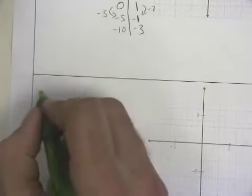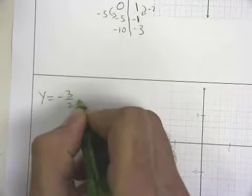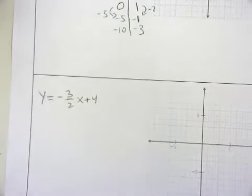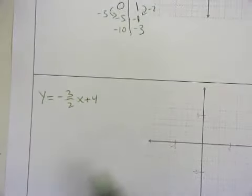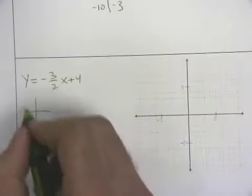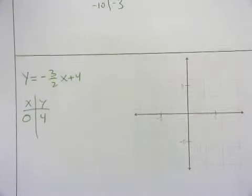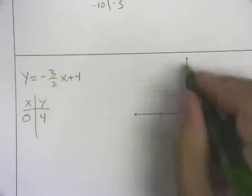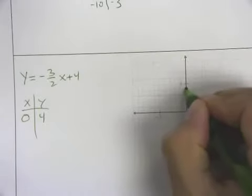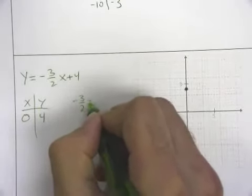The reason why this becomes so useful is this. If I ask you for a whole bunch of solutions to y equals negative 3 over 2x plus 4, you could plug in 0 and then plug in 2 and then plug in 4 and then plug in 6. Or you can find that one easy solution, which you know is the y-intercept, it's on our y-axis right there.